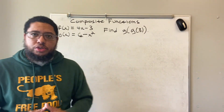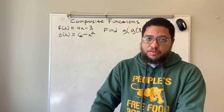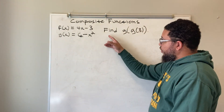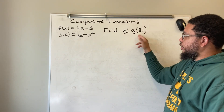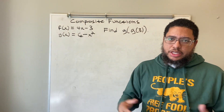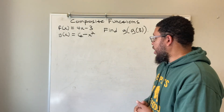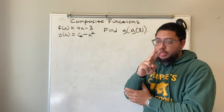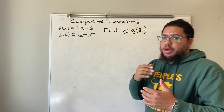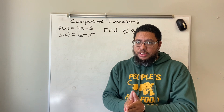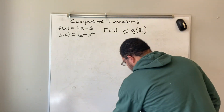Welcome back to All This Math. This is Professor Parker and we're doing some more composite functions. A composite function is basically when you have a function inside of another function. Here we have two functions: f of x and g of x. We're trying to find g of g of 3. I know that might look intimidating — don't let it scare you. I'm going to break it down and make it seem real simple. I like to work out the inside function first, then the outside function, one step at a time.